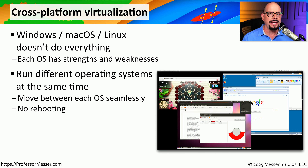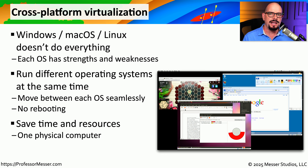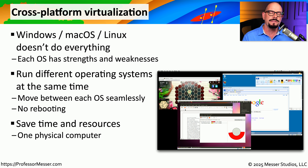You can also do this on demand. So if you need to run one particular application in the afternoon that only runs in Windows 11, you can start your Windows 11 virtual machine, run your application, and then shut it down. You have complete control over which application you're running in which operating system, and you don't have to reboot just to change the OS. This saves time because we don't have to reboot or find another system, and we're also saving resources by running all of these different operating systems on one physical computer.